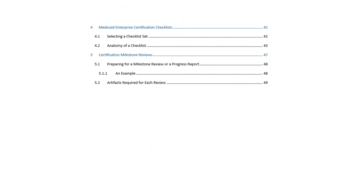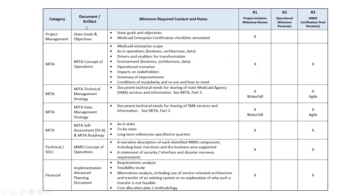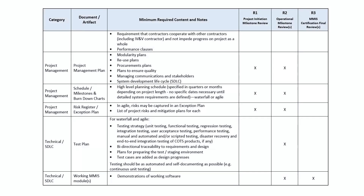The next document in the toolkit is the list of required artifacts for each of the milestone reviews. In this column is a list of the document names. The next column shows the minimum necessary elements in the document. Note that this is only the minimum CMS requires — the state may require more. Also, Waterfall and Agile methods call documents by different names. We've tried to account for this. An example is the schedule, which could also take the form of milestones with a burndown chart.